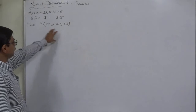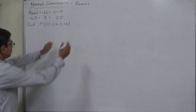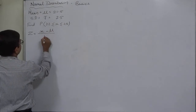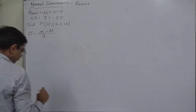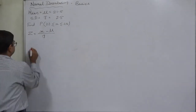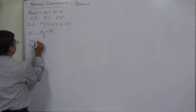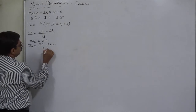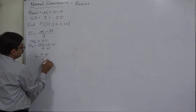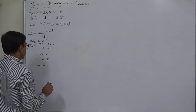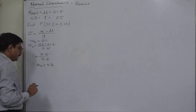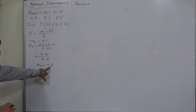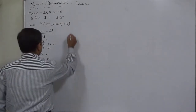The lower limit is 22 and the upper limit is 28. Let's first find out the z-score. The formula to calculate z-score is x minus mu divided by sigma — that is x minus mean divided by standard deviation. The first value of z will be for x equals 22, so it will be 22 minus 21.5 divided by 2.5, which is 0.5 divided by 2.5. The first z-score comes to positive 0.2. That means x is 0.2 times the standard deviation greater than the mean.